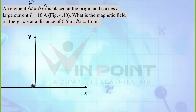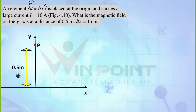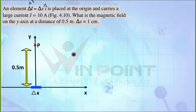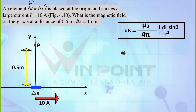This is the origin, and we mark a point P on the y-axis. The distance from the origin to point P is 0.5 meter. The element is delta x — instead of dl they have given delta x. The current value is also given as 10 ampere. Now, which equation can we use here?